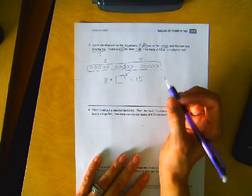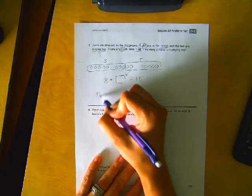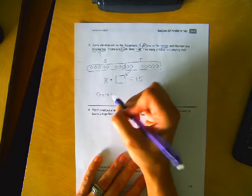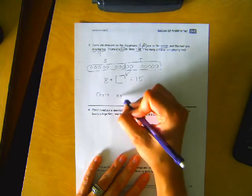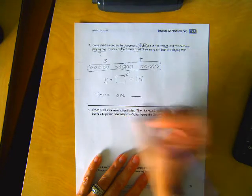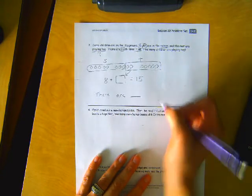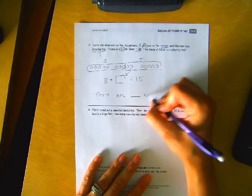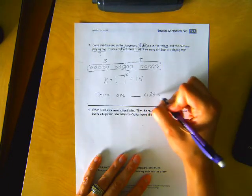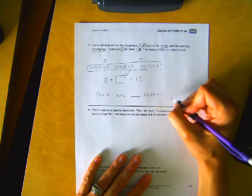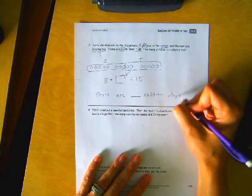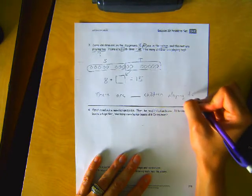And now we have to write a statement. There are, this is where you need to write in the number, children playing tag.